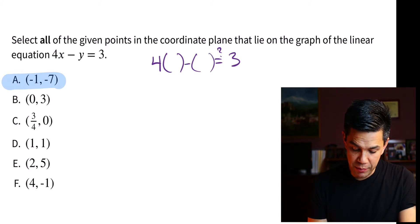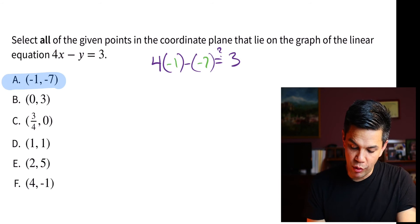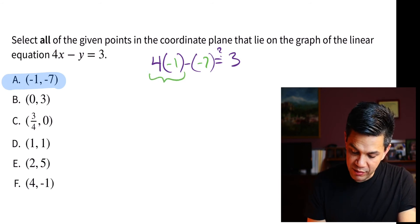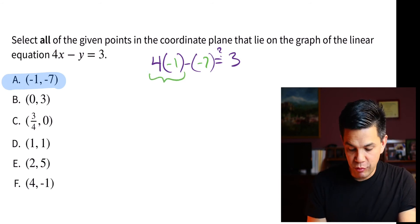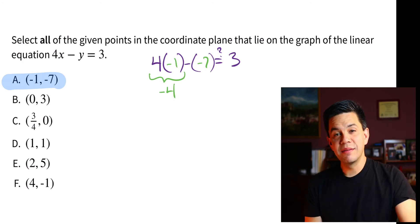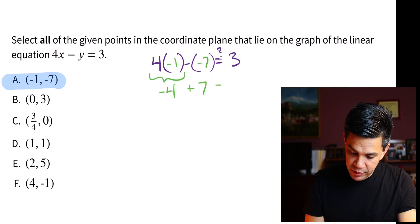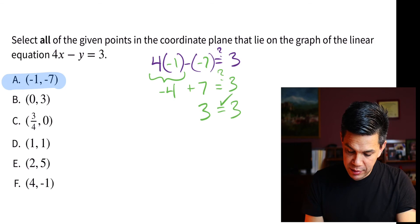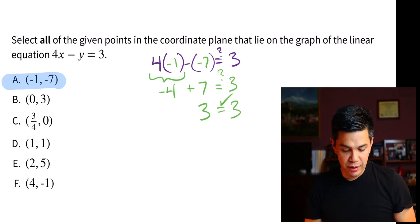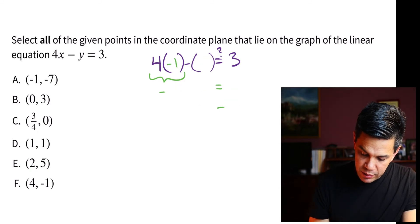So the first one has negative 1 for our x value and negative 7 for our y value. Go ahead and evaluate these four times negative 1 is negative 4. Minus a negative 7 is the same as adding a positive 7. Does that equal 3? The first one is a success. The first one works out just fine. The first one is going to work for our situation. Good. We found a couple values that make this true.